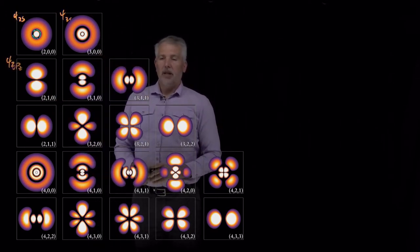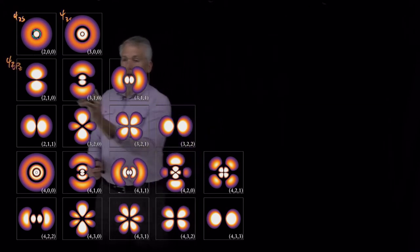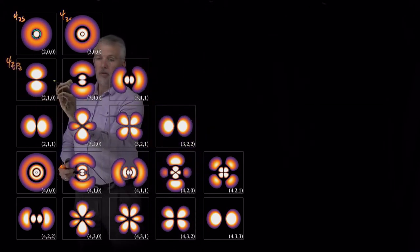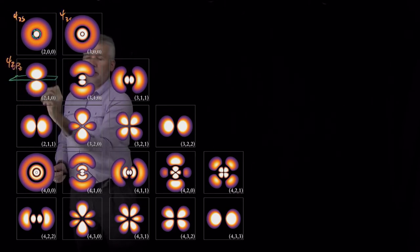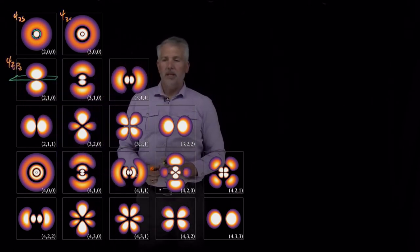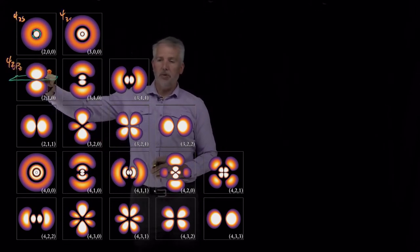And now rather than having a radial node, we have an angular node. So this region, flat region right here, which we could draw as the plane containing the x and y axes, that's an angular node because at that particular value of theta, theta equals pi over 2, we're never going to observe the electron.